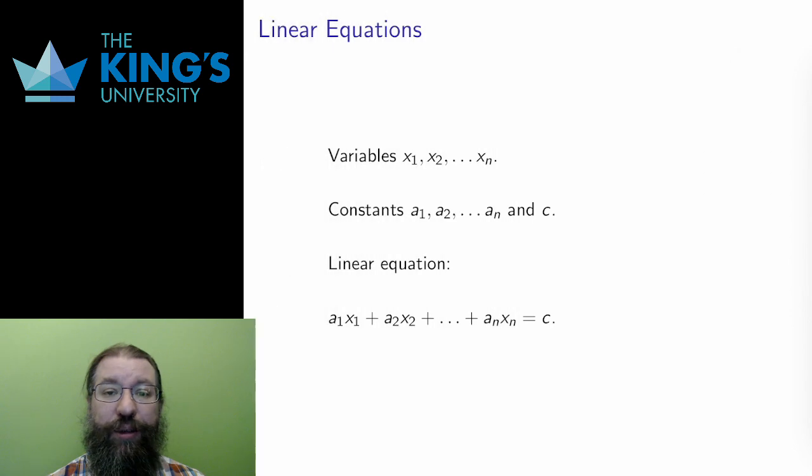Let me very briefly remind you what a linear equation is. If I have variables x1 to xn, and constants a1 to an, and c, these constants being real numbers, then the linear equation looks like this. I multiply the variables by the constants, add them up, and make them equal to the final constant, c.